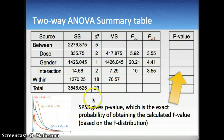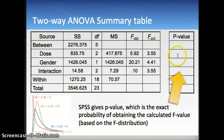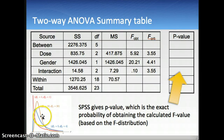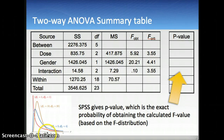Another way — the way SPSS does it — is to look at the obtained F value and figure out the exact probability of obtaining that result. You simply check whether the probability is smaller than 0.05. SPSS uses the degrees of freedom to pick the appropriate F distribution curve and calculates the exact probability of obtaining that F value.